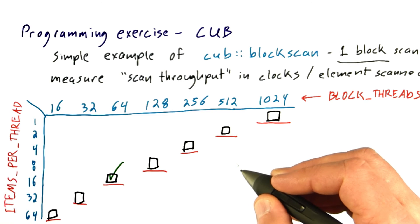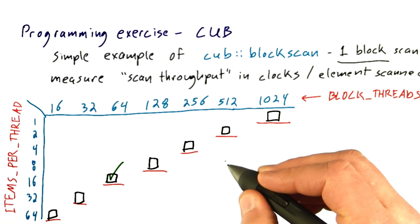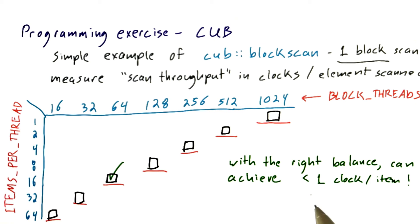And what I found is that with the right balance, you can have a computational overhead of less than one clock cycle per item scanned. That's really pretty remarkable. Think about running this code on a CPU, you couldn't really achieve less than one clock per item scanned.